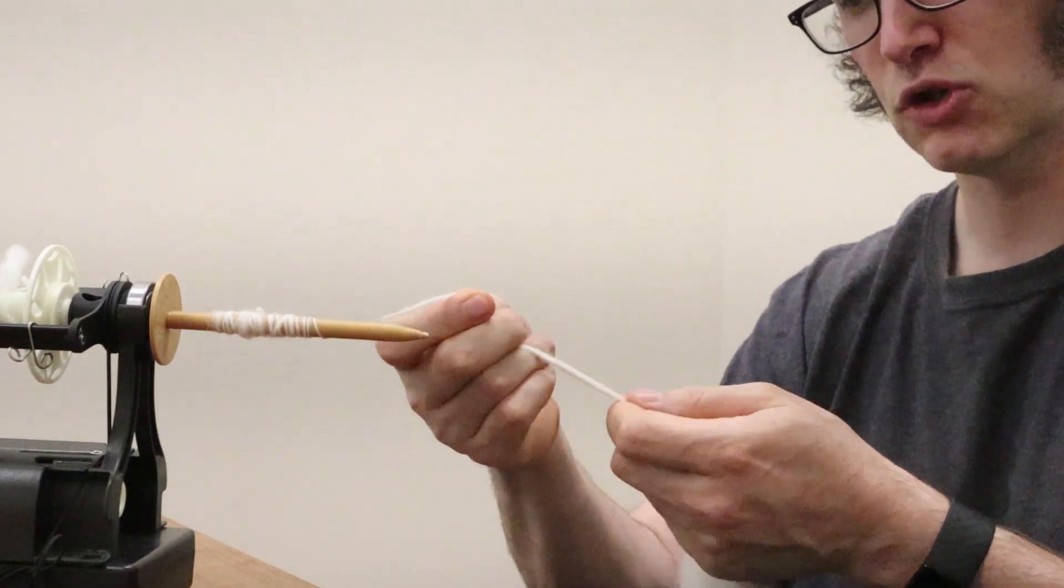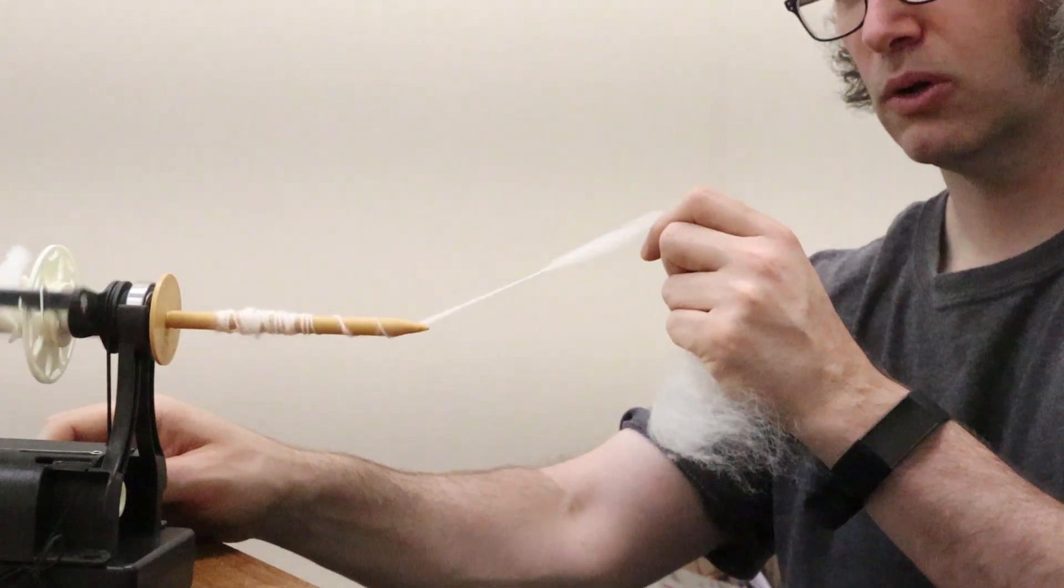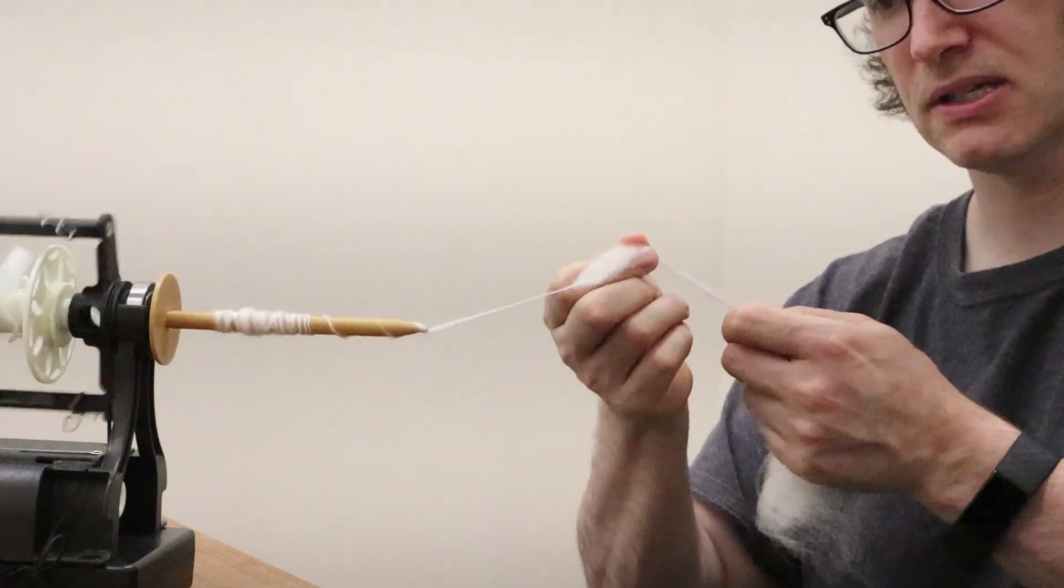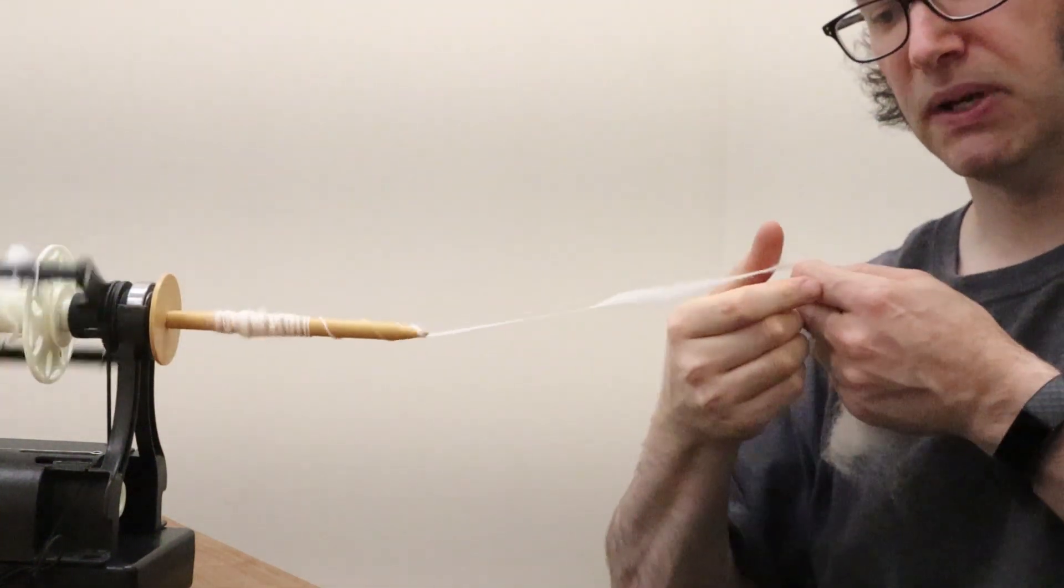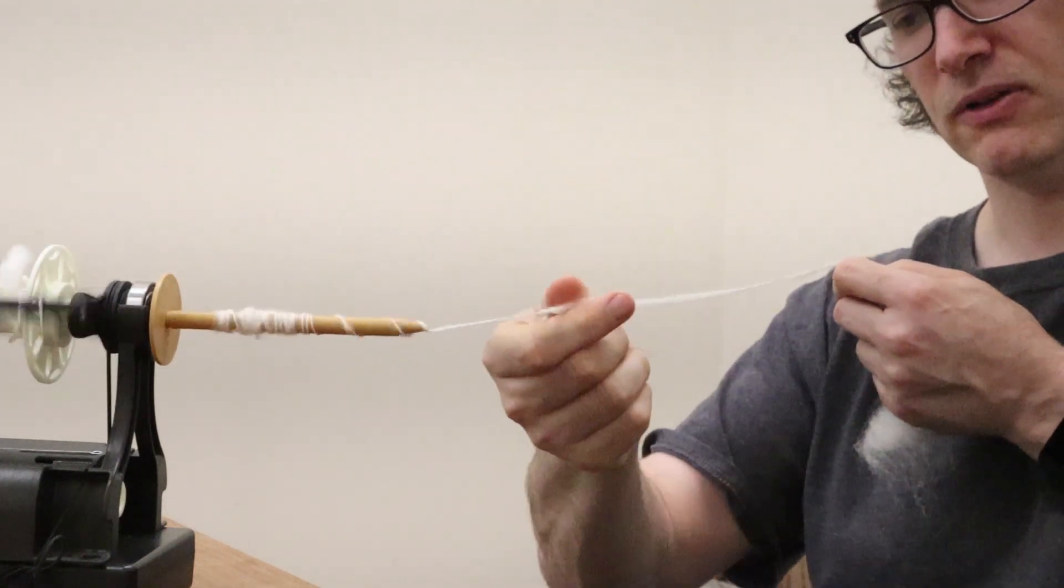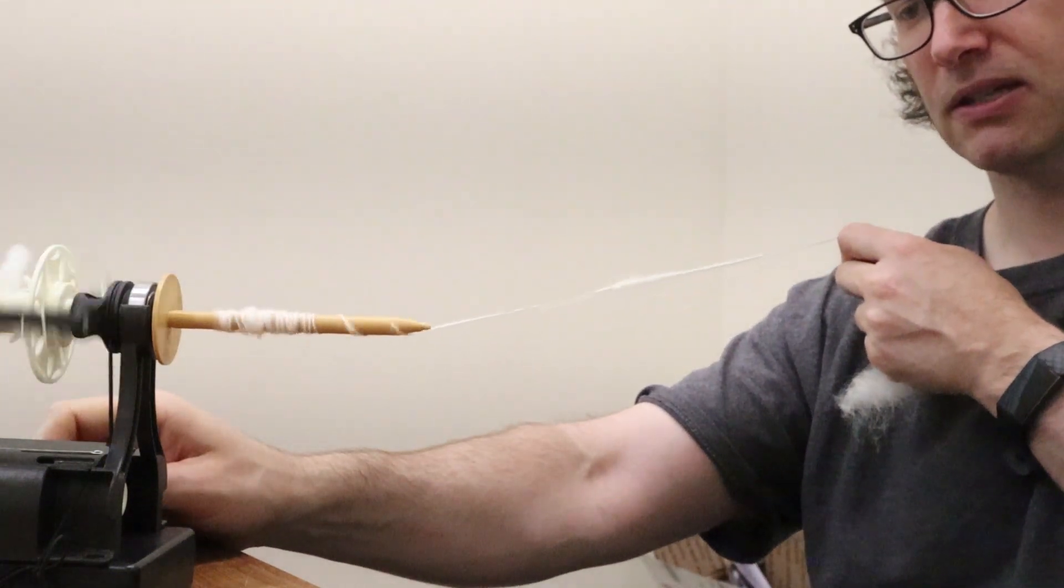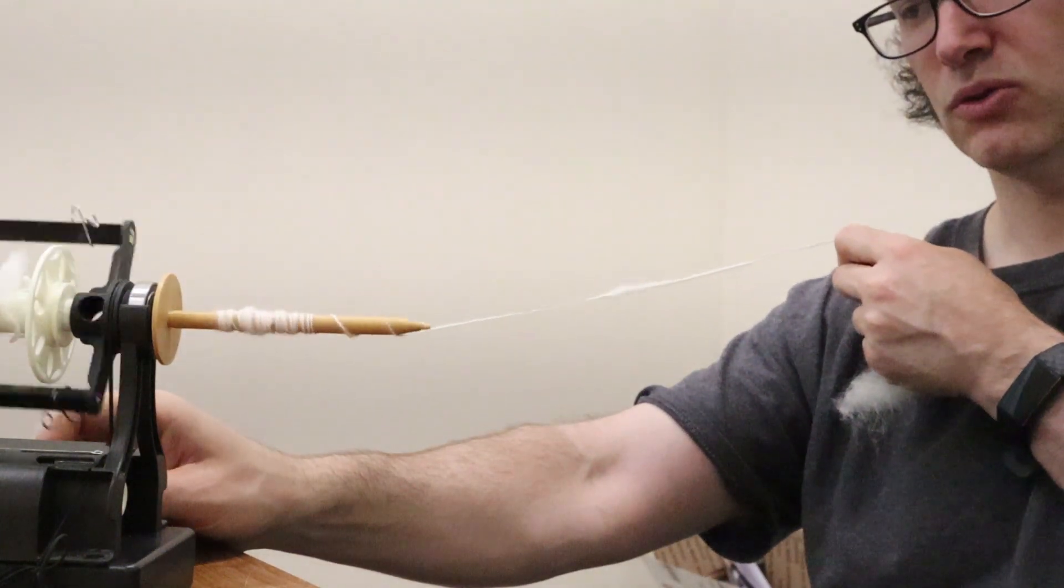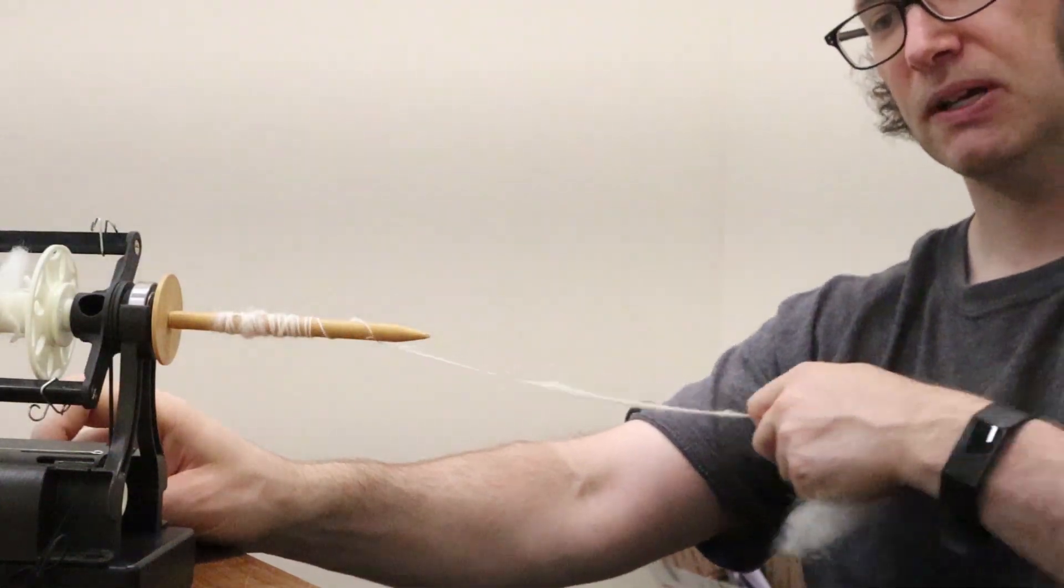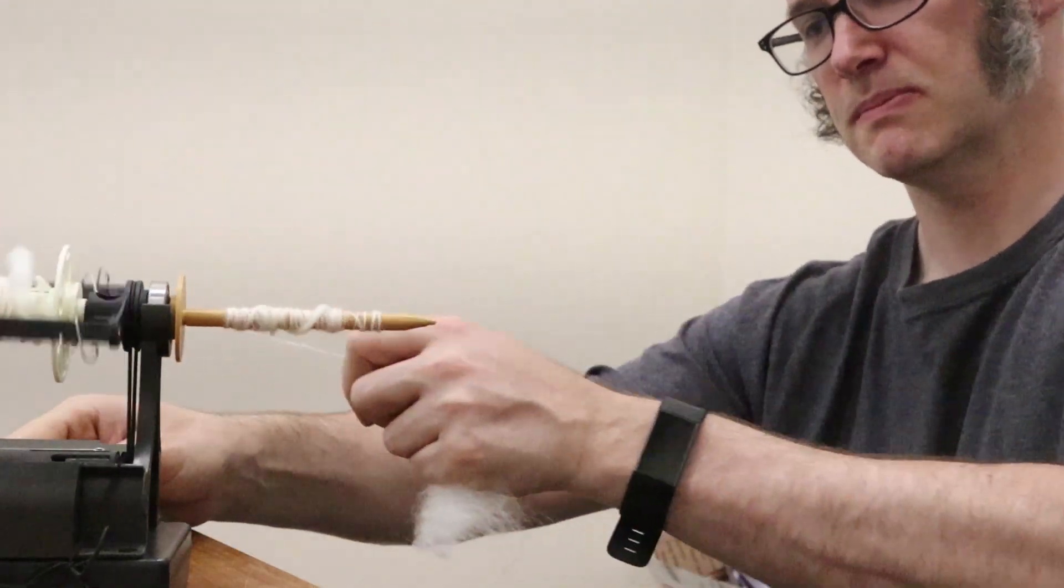So those are sort of the two movements we're going to be doing today. I'm just going to apply some twist. You do tend to do a bit longer drafting with this because you need to get it smoothed out. I kind of got a blob there. But when you're happy with the amount of twist, I tend to stop it just because I'm not very experienced, and then I spin it onto the spindle here.